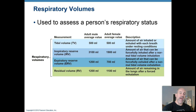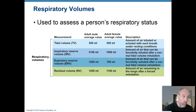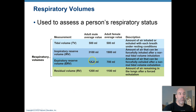You also have an expiratory reserve volume, or ERV — the volume of air that you can force out of your lungs after a normal exhale. If you do a normal tidal volume inhale and exhale, then blow out as much air as you can, that extra air is your ERV. That's about 1,200 milliliters in a male and 700 milliliters in an average female.